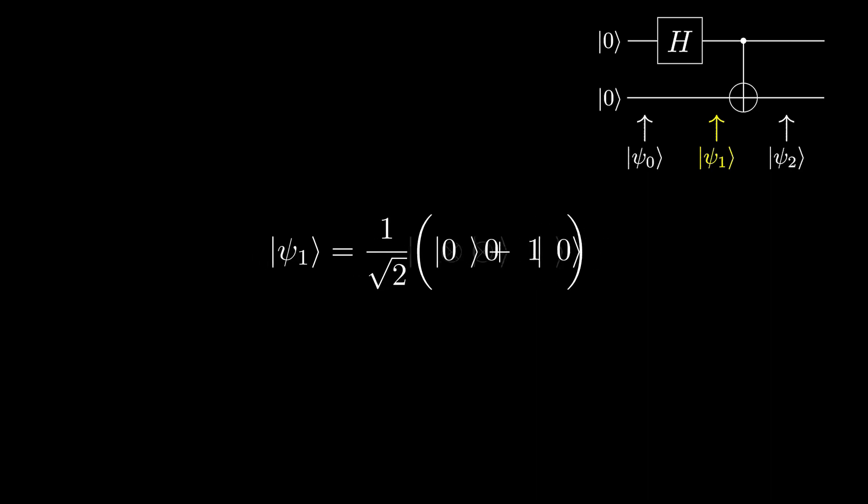Let's distribute the zero state into the equation, giving us the state one on root two zero zero plus one zero.